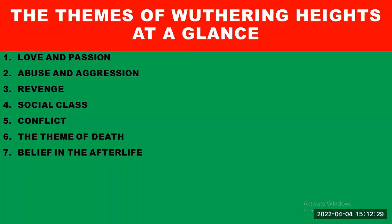First, a look at the themes of this novel at a glance. Number one: love and passion. Number two: abuse and aggression. Number three: revenge. Number four: social class. Number five: conflict. Number six: the theme of death. And number seven: belief in the afterlife — that is, life after death.